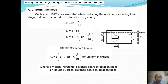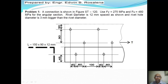This formula applies for uniform thickness. In the next video we will present how to apply it for non-uniform thickness. For example problem one: a connection using an angular section, fy = 275 MPa, fu = 480 MPa, rivet diameter is 12 mm, and the rivet hole is 3 mm bigger than the rivet diameter, so the hole diameter dh = 15 mm.